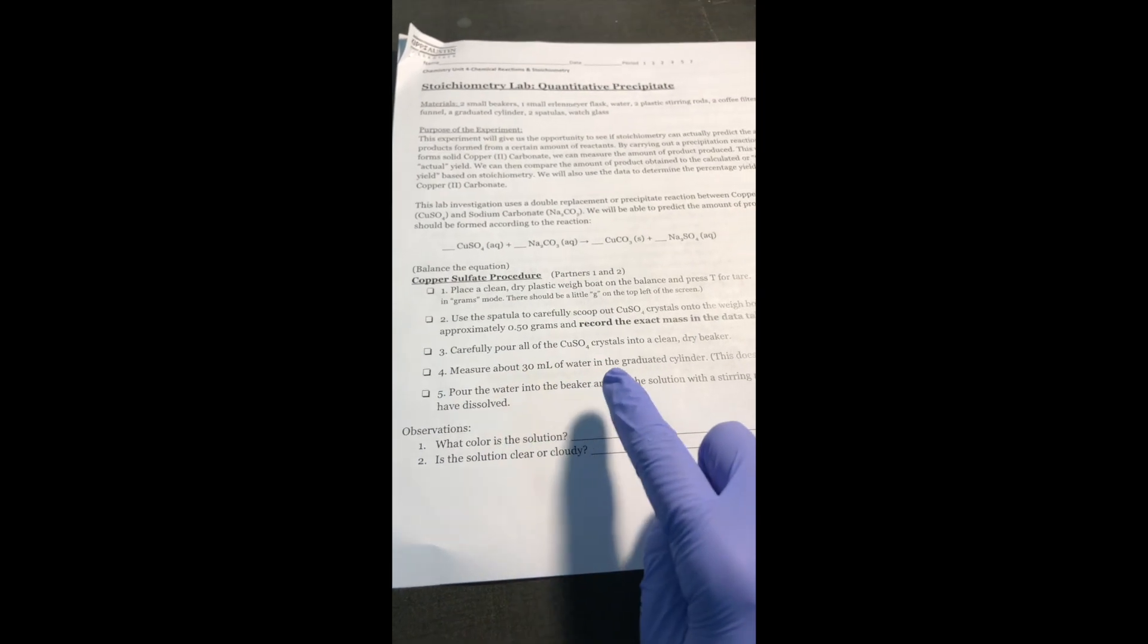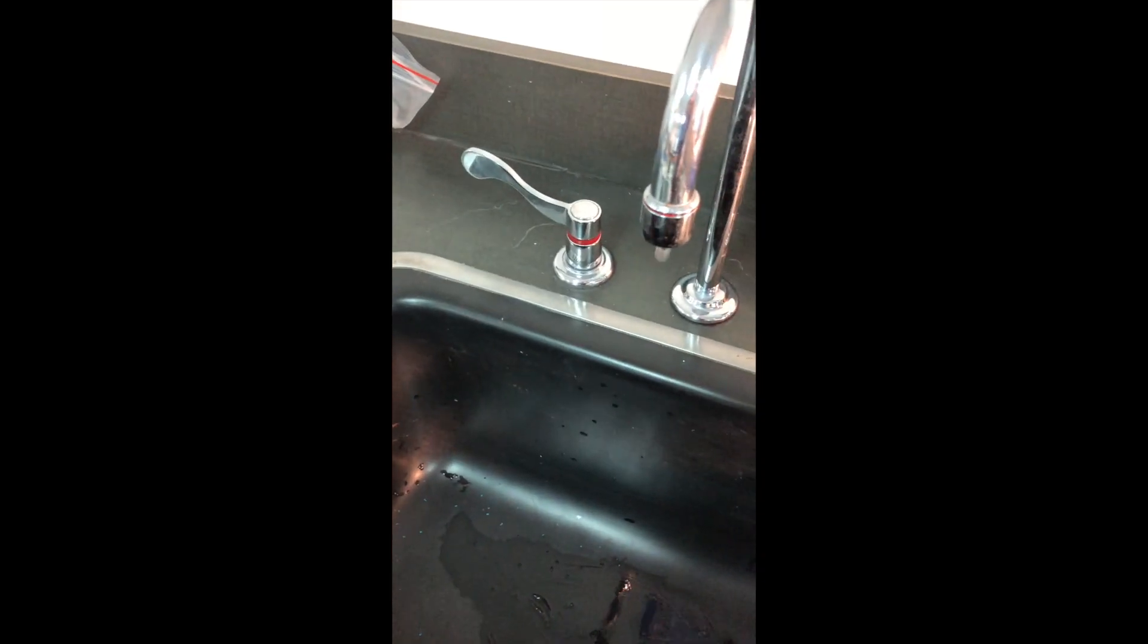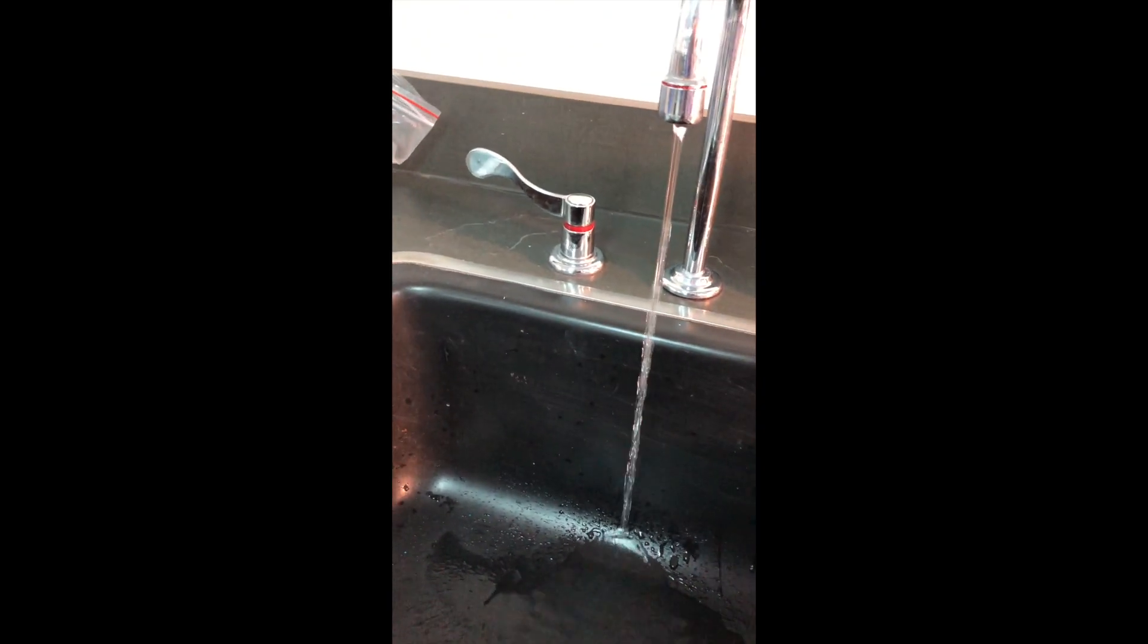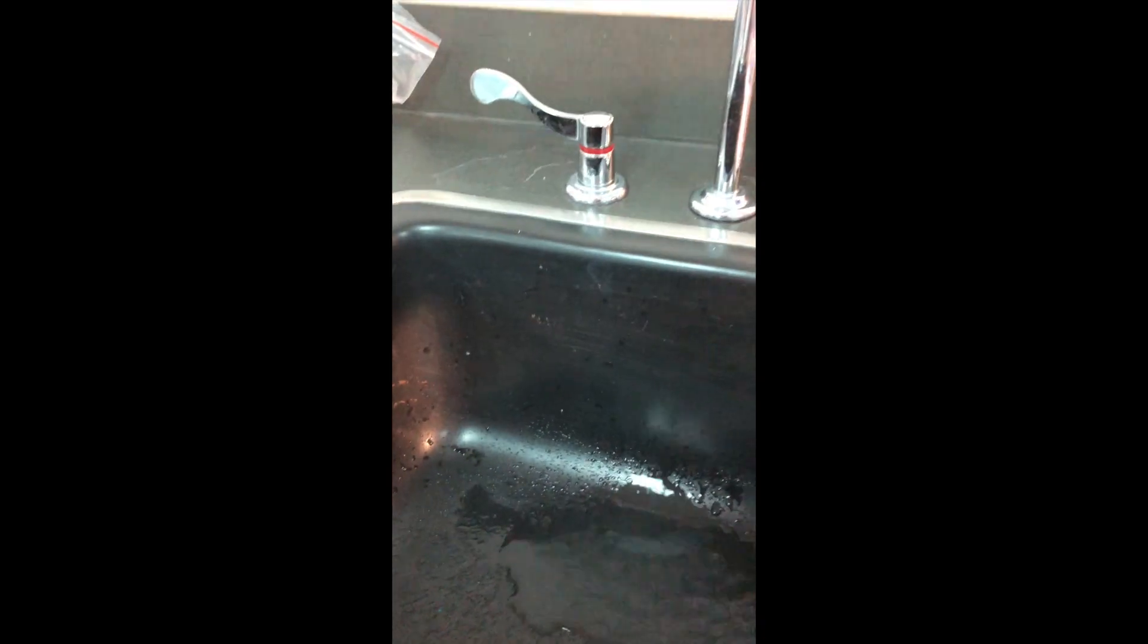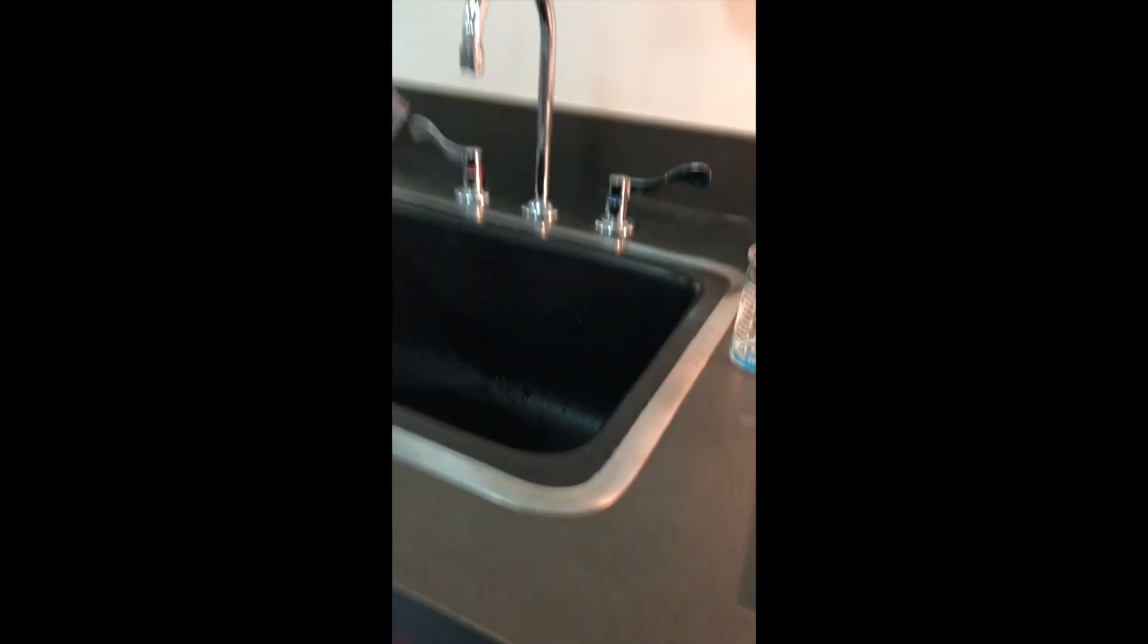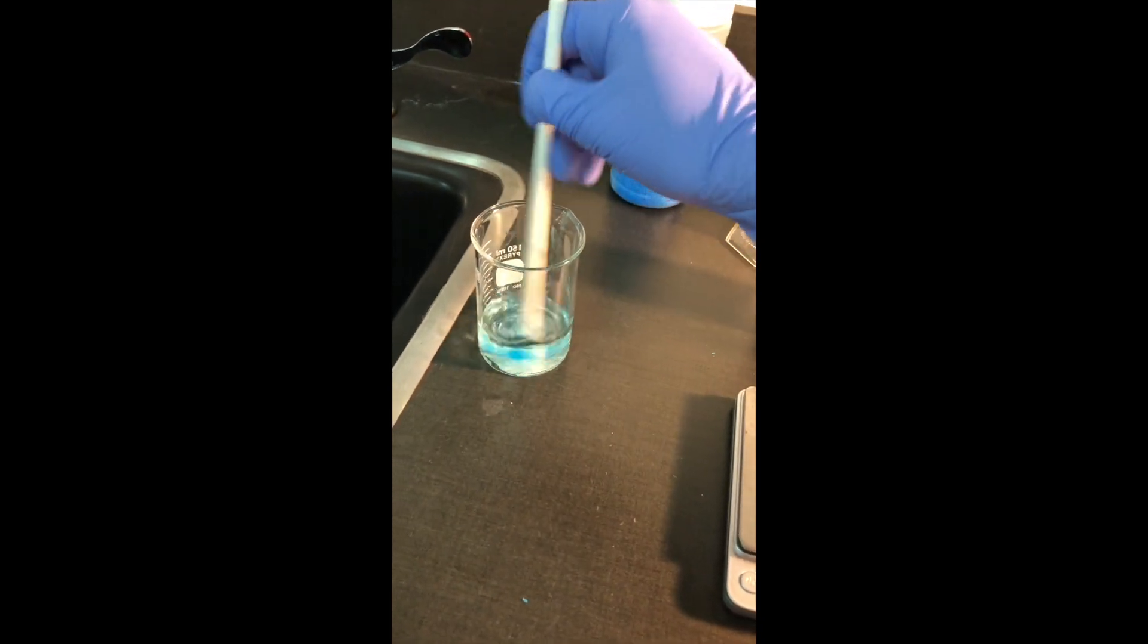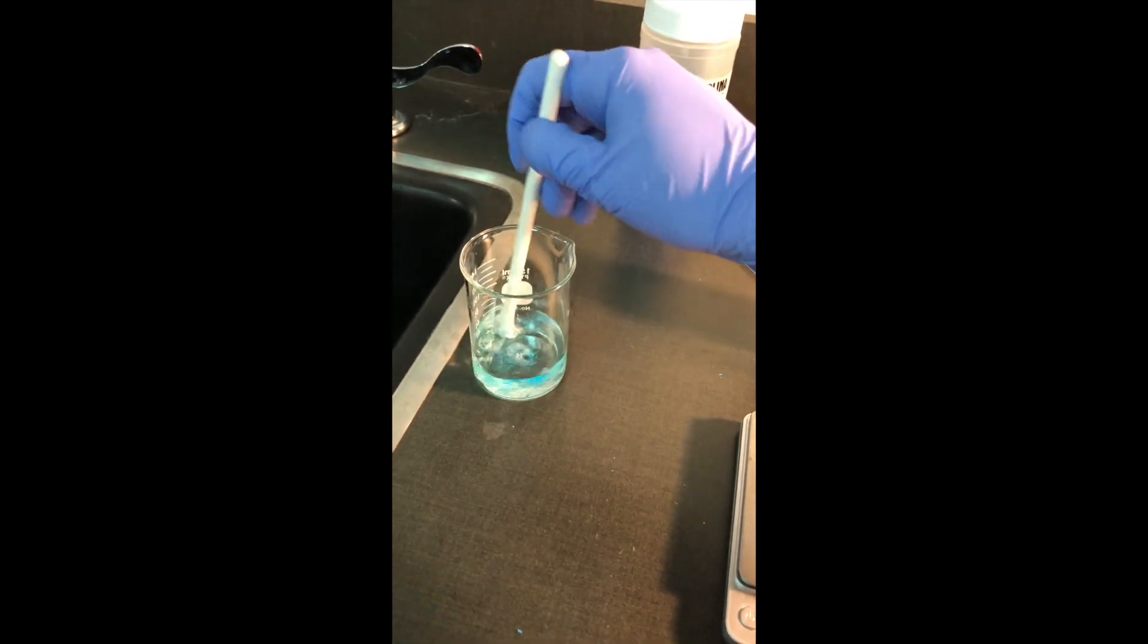Next step, measure about 30 milliliters of water in the graduated cylinder. This does not need to be exact. We're not making any super special solutions that have to be exactly a certain volume. So I'm just going to get this close, overshot a little bit, pour some out. Close enough. It needs to be just probably between 30 and 35 milliliters. The next step says pour the water into the beaker and stir the solution with the stirring rod until all of the crystals have dissolved. And we'll pour it in here and stir until all of these crystals have dissolved.